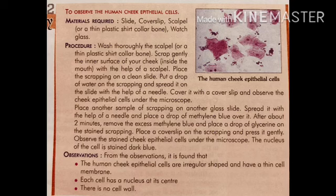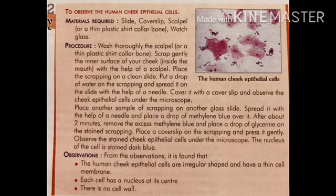Place a cover slip on the scraping and press it gently. Observe the stained cheek epithelial cell under the microscope — the nucleus of the cell is stained dark blue. From the observation, it is found that human cheek epithelial cells are irregular in shape and have a thin cell membrane. Each cell has a nucleus at the center and there is no cell wall. When school opens, I will show this in the lab.